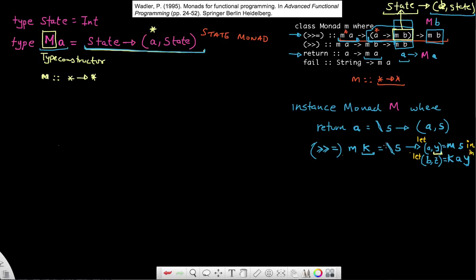What should the entire bind method give back as output? Looking at the bind signature, it should return something of type M of B. That M of B is already computed — I've got my B and my Z after computing K A Y. So this entire thing returns the tuple (B, Z).